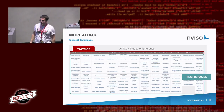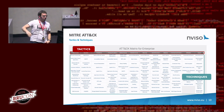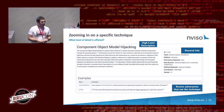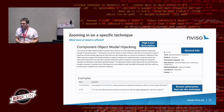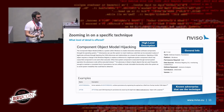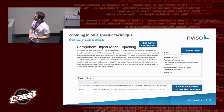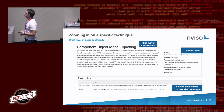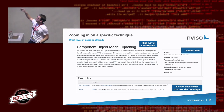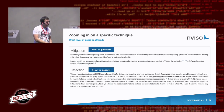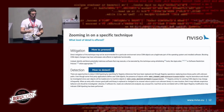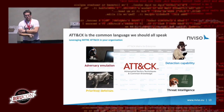We can use MITRE ATT&CK — tactics at the top, techniques at the bottom. Take COM hijacking, for example — I personally think it's very underrated and doesn't get the attention it deserves. It works really well as a persistence mechanism. MITRE ATT&CK gives documentation on what it is, how it works, which adversaries use it, and how you could potentially detect or mitigate it — a solid base of information.